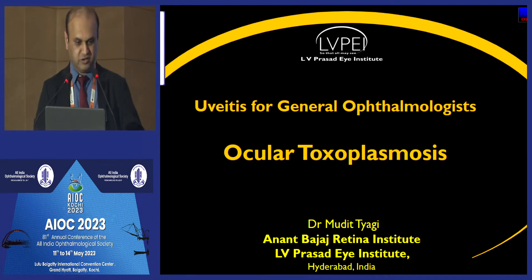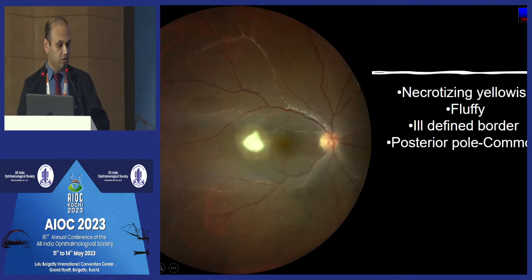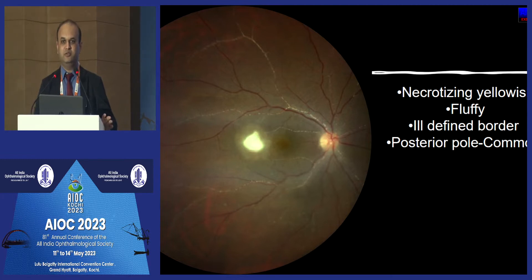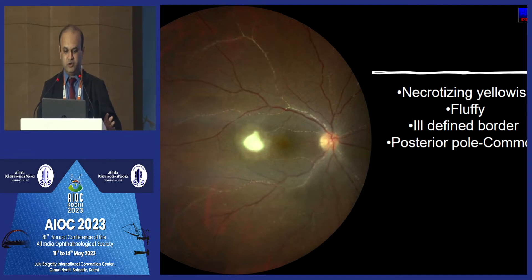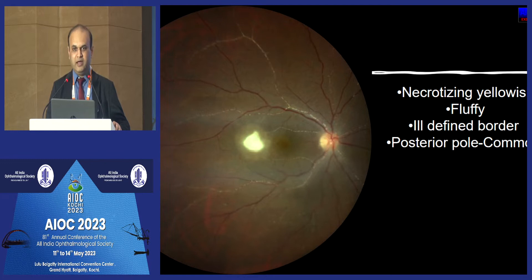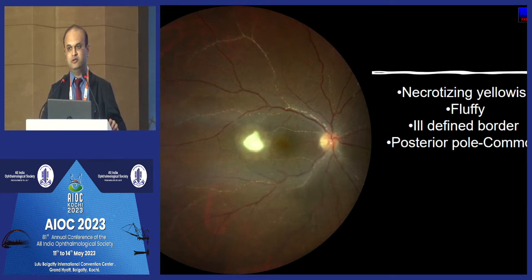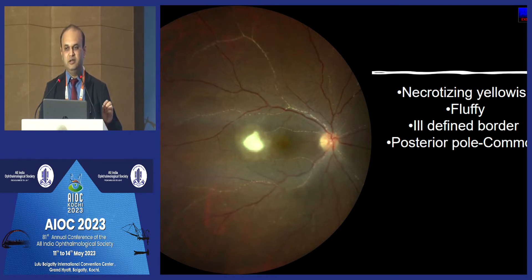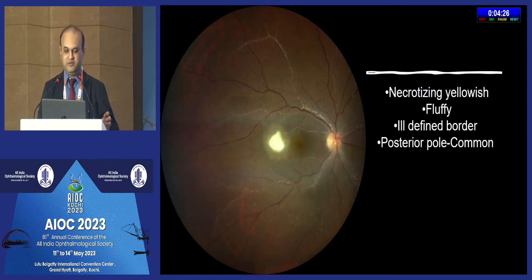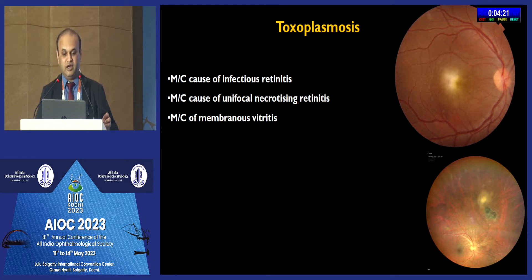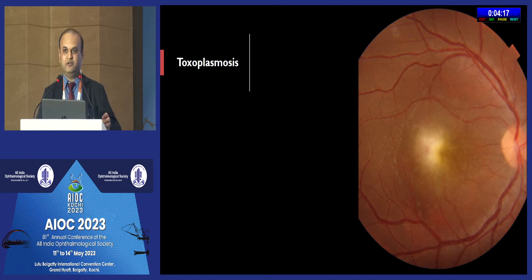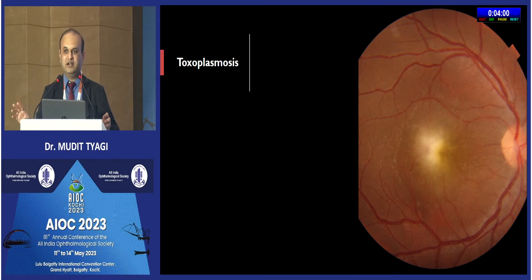Good afternoon. Thank you to AIOC and the chairs of this session. Ocular toxoplasmosis usually presents as a necrotizing, yellowish, unifocal lesion with an ill-defined border, more commonly at the posterior pole. Most of the times it is a clinical diagnosis — you can identify it on the basis of a good clinical evaluation alone, without resorting to many investigations. It is the most common cause of infectious retinitis and unifocal necrotizing retinitis. Whenever you see dense vitritis, three common differentials are toxoplasmosis, acute retinal necrosis, and sometimes endogenous endophthalmitis.